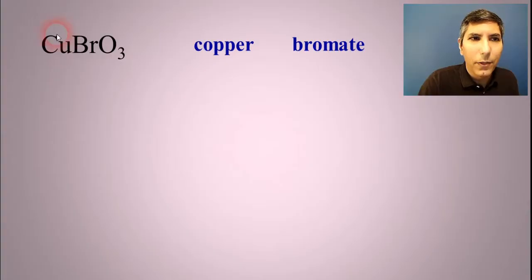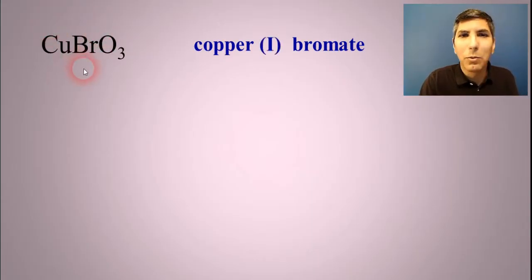So this tells us that the copper and the bromate must have had charges that canceled out since we didn't have any swapping going on here. So the charge of bromate is minus one. So copper has to be plus one. So it's copper(I) bromate. You have to be kind of like a detective here to figure out the charge on some of these transition metals.